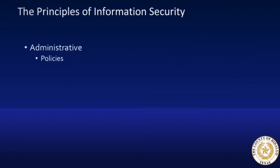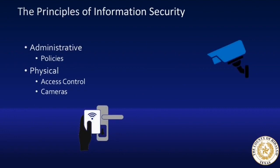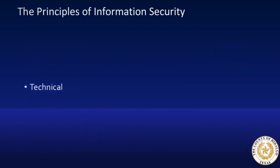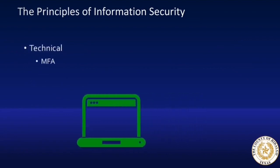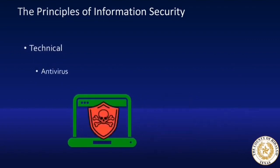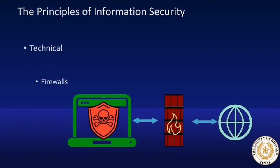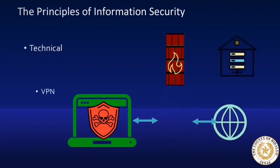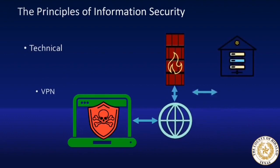We just covered administrative controls such as the acceptable use policy, and physical controls like access cards and security cameras. Now let's look at technical controls such as multi-factor authentication, or MFA, used as a secondary verification when you log into your computer. With so many breaches out there, this is highly recommended. Antivirus is also a form of technical control, as is the firewall, which is an appliance that monitors the inflow from our network to the internet, both inbound and outbound. And of course VPN, which has become critical due to COVID — an encrypted connection from a computer outside of our network into our internal systems.